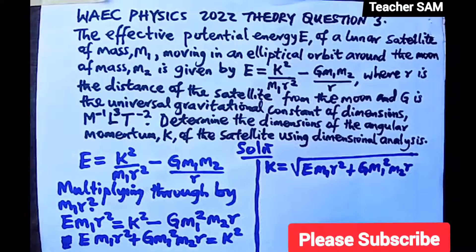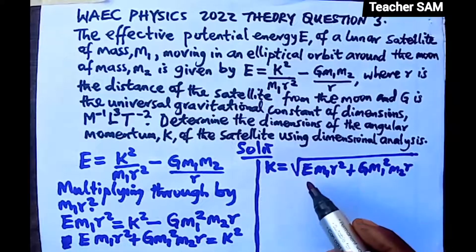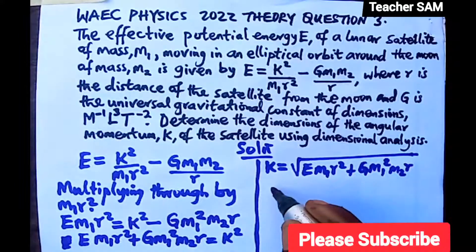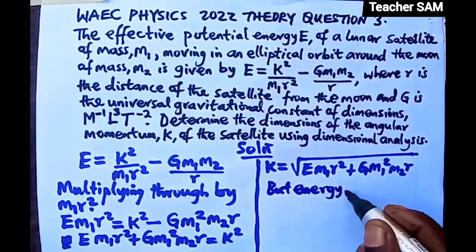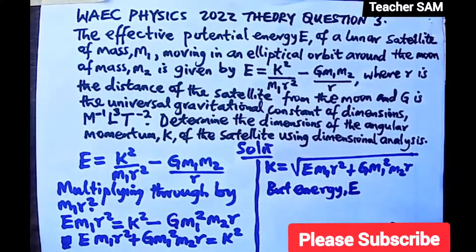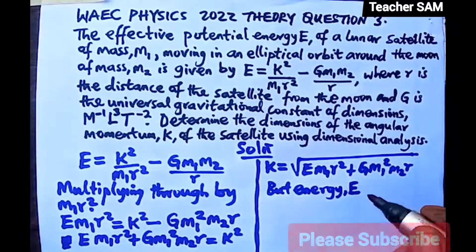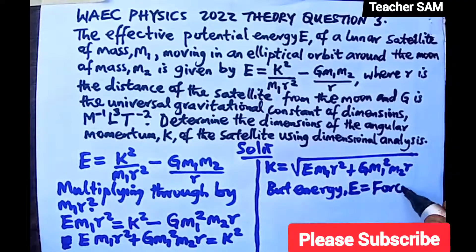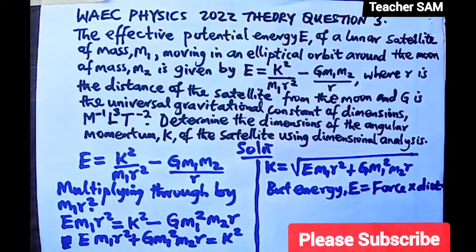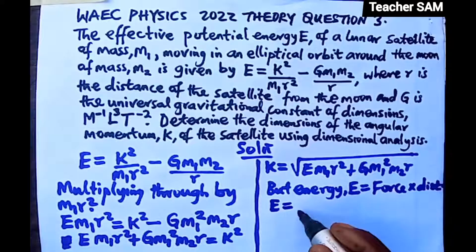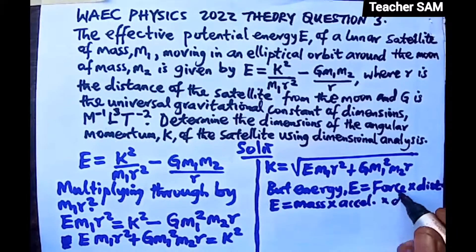Now I need to recall the dimension of E, the potential energy. Remember that energy is the same as work done — they both have the same unit, joules. Energy is the ability to do work, so we can use the formula for work done, which is force times distance. Our force is mass times acceleration, so E = mass × acceleration × distance.